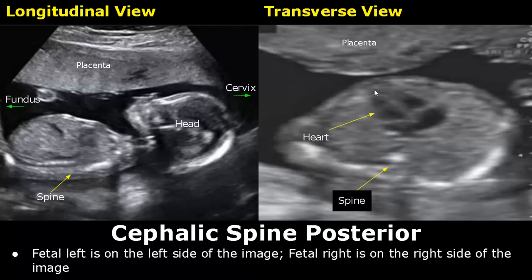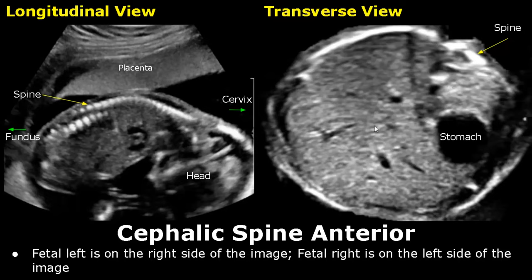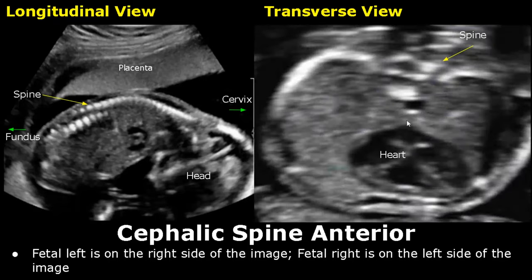The second orientation is cephalic spine anterior, where the spine is oriented anteriorly. In the transverse view, fetal left is on the right side of the image and fetal right is on the left side of the image. The spine is seen on the upper side of the image. Here is the stomach, so this is the left side of the fetus. And here is the heart — the apex is pointing towards the fetal left. The spine is seen on the top side of the image.